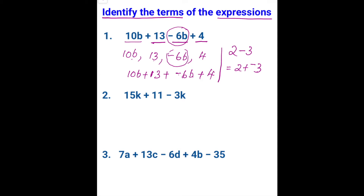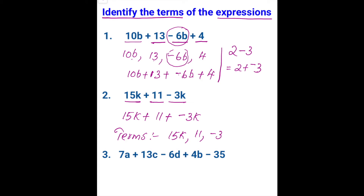Let us look at the second problem. We have 3 parts: 15k, 11, and negative 3k. Let us rewrite that as an addition sentence: 15k plus 11 plus negative 3k. Now you identify the terms. The terms are 15k, 11, and negative 3k.